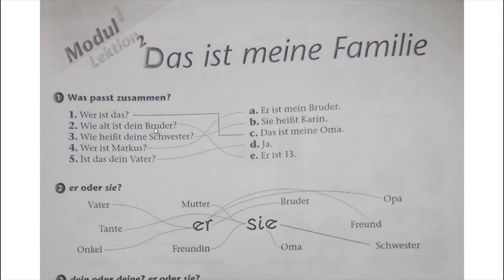Then number 3: Wie heißt deine Schwester? 'Deine' is for feminine. Sie heißt Karin. 'Sie' is also for feminine.